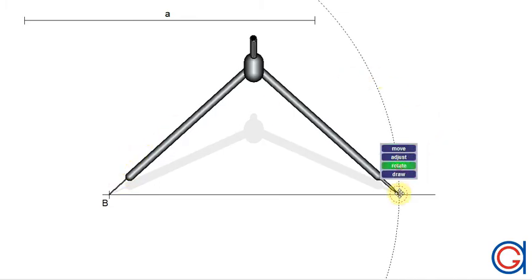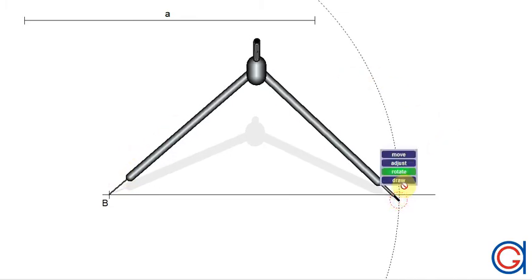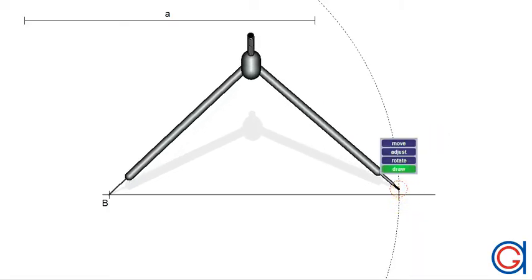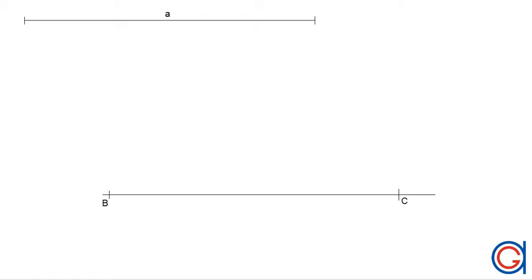Next, setting the compass to the length of the given side A, we transport this onto the horizontal line from point B, obtaining the second vertex of the triangle, vertex C.